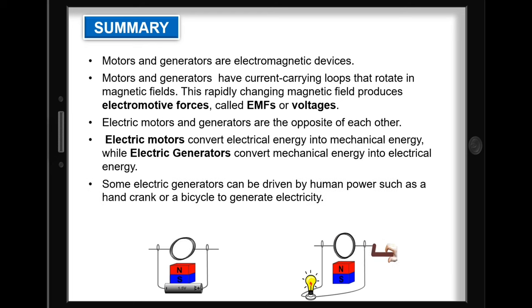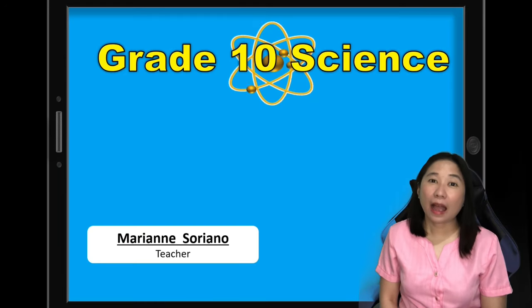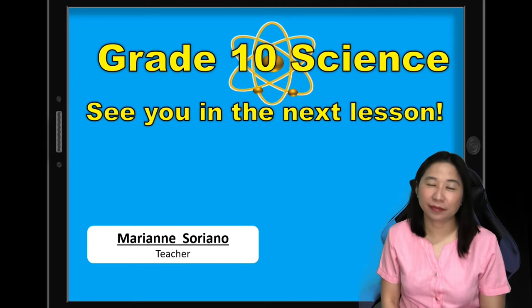Some electric generators can be driven by human power, such as a hand crank or a bicycle to generate electricity. I hope you learned and enjoyed our lesson. This is Ma'am Marian Soriano. See you in the next lesson.